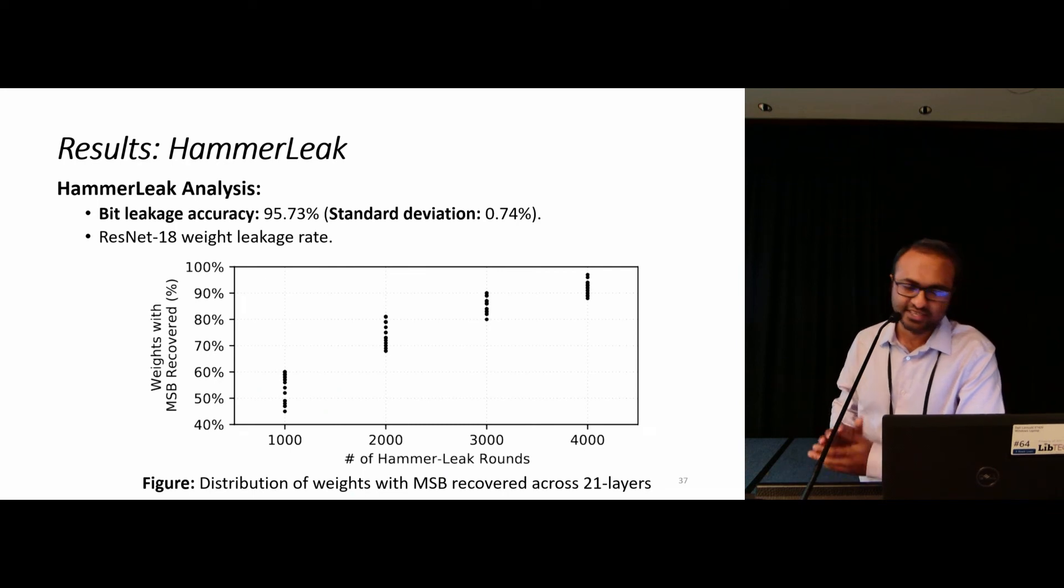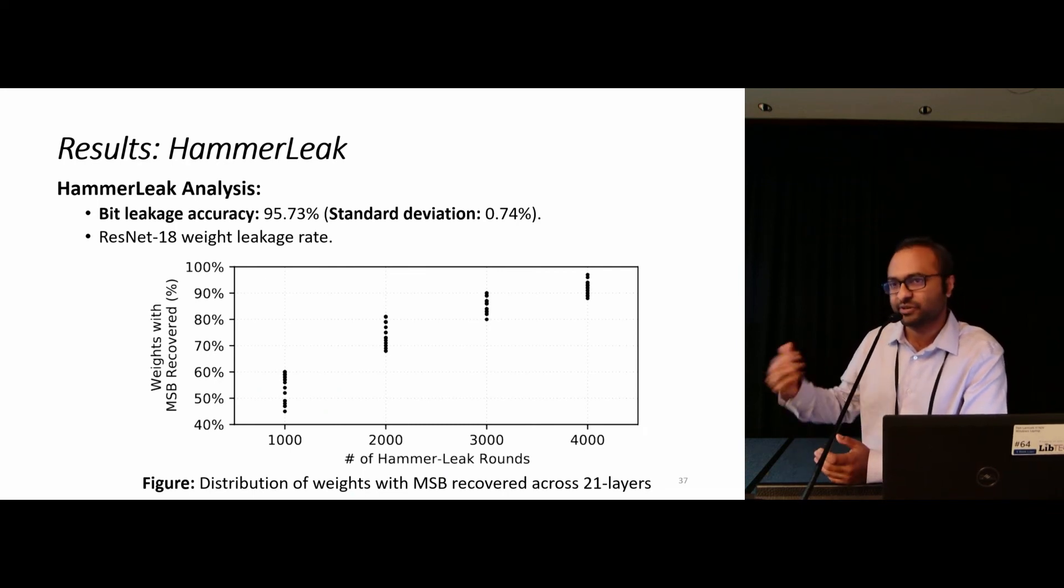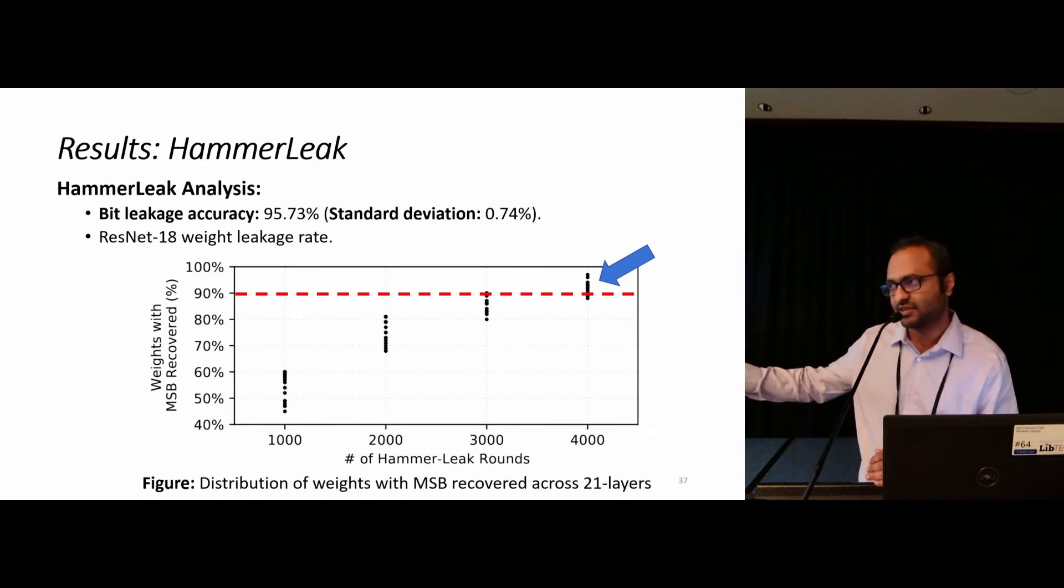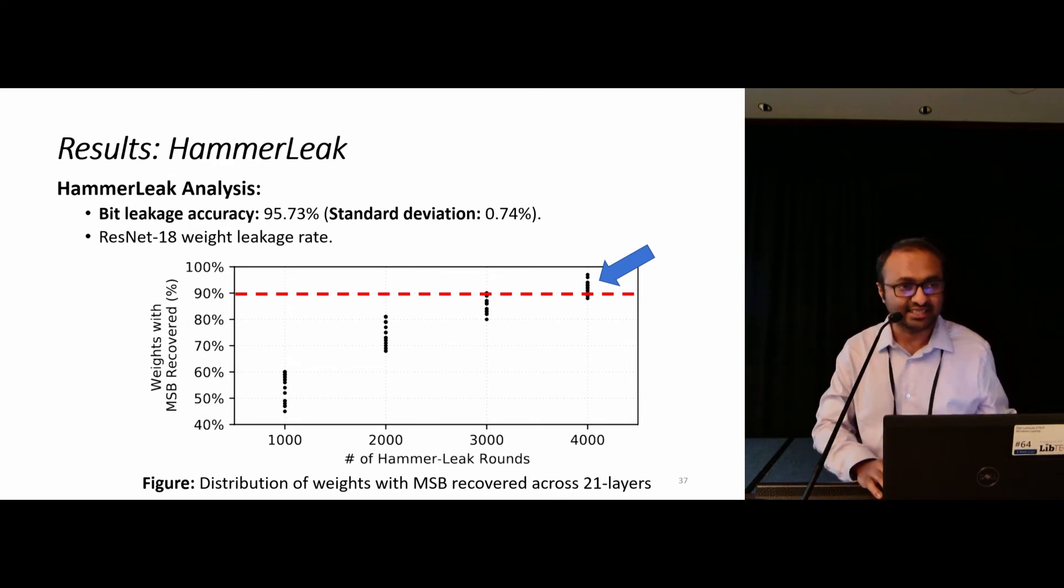In terms of results of HammerLeak, HammerLeak is an extremely successful attack with 95% accuracy and it is pretty stable with a standard deviation of 0.74. Using more rounds of HammerLeak, we could recover more and more weight information. You could look here with 4,000 rounds of attack, we could recover almost 90% of the accuracy across all layers of the ResNet-18 model.